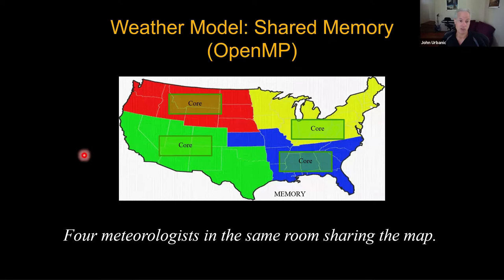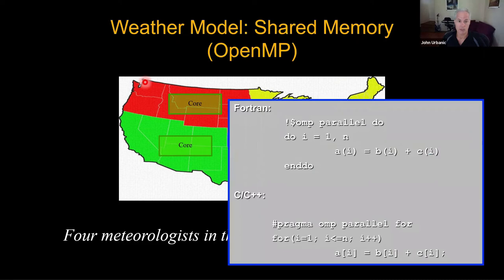We can break the map up into pieces — each core is only responsible for its piece. This would be a nice multi-core way to speed up the problem. The technique we might use for this would be OpenMP, the most popular way to do multi-core programming like this, and it would indeed speed things up by a factor of four. You can think of it like four meteorologists in a room sharing the map, all responsible for calculating one quarter — that's standard multi-core programming.